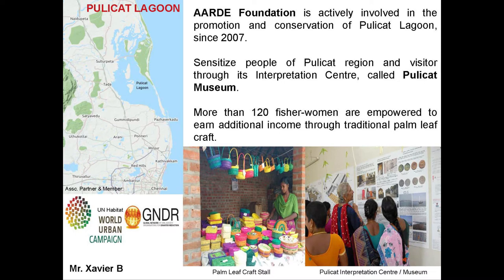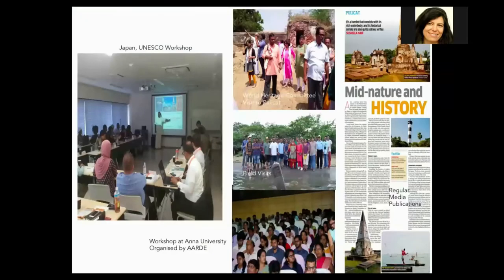The last case study is about Pulikat Lagoon, the second largest brackish water lake in India and a very threatened ecosystem. CEM members, with support from UN-Habitat, the World Urban Campaign, and GNDR, are trying to conserve species and restore this area by developing community awareness initiatives and raising awareness at international level so the area can be conserved as a heritage and conservation priority area for the region.